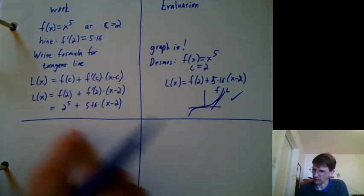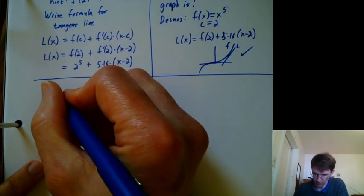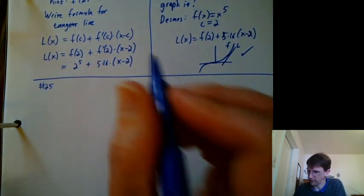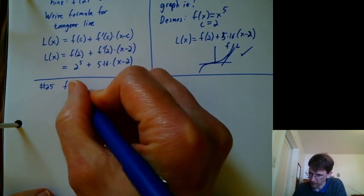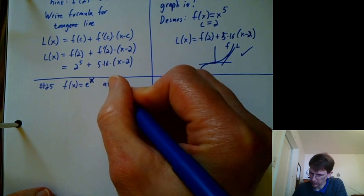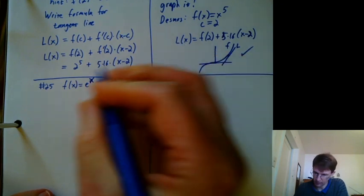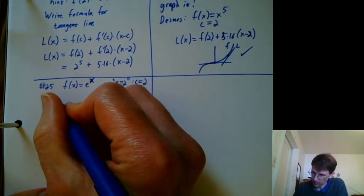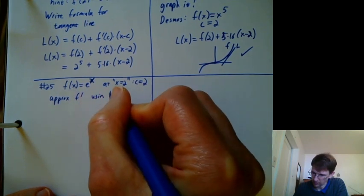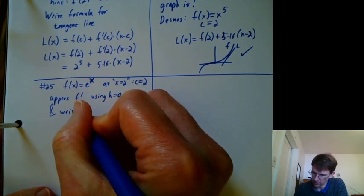And I just go on to the next problem. I draw a horizontal line. Let me do another example problem here. This is actually number 25 from the textbook. So I'm kind of giving away the answer here. But really, you should be able to do it by yourself. It's f of x equals e to the x. And the book says that x equals 2. Really what it means is c equals 2. And we're supposed to approximate f prime using h equals 0.1 and write a tangent line formula.